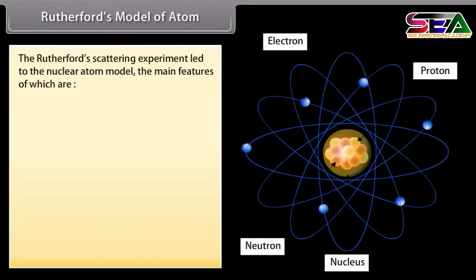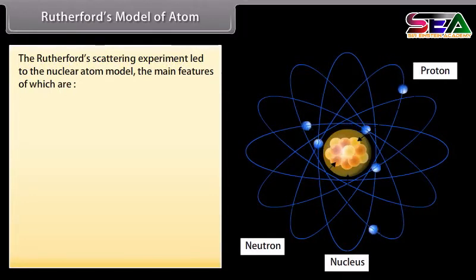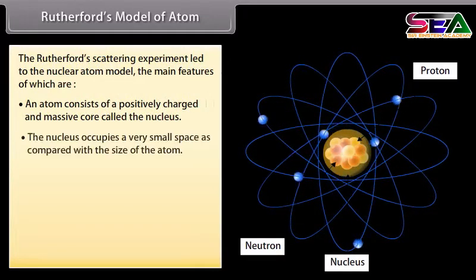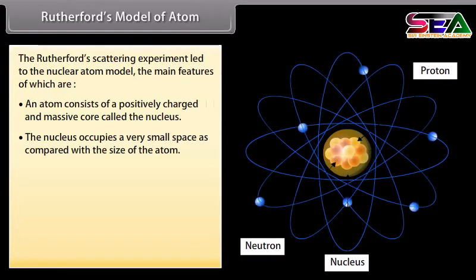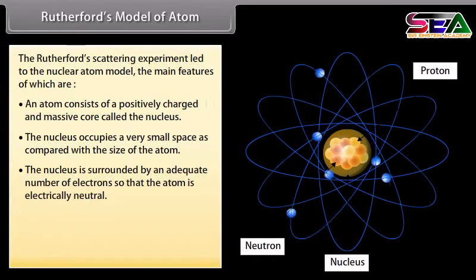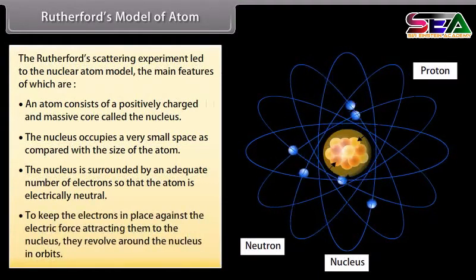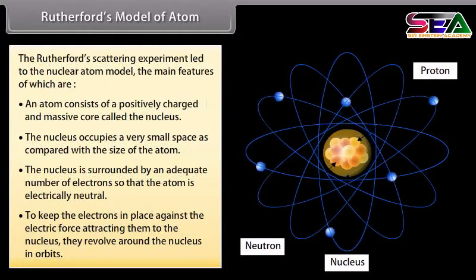Rutherford's model of atom: The Rutherford scattering experiment led to the nuclear atom model. Its main features are: an atom consists of a positively charged and massive core called the nucleus; the nucleus occupies a very small space compared with the size of the atom; the nucleus is surrounded by an adequate number of electrons so that the atom is electrically neutral; and to keep electrons in place against the electric force attracting them to the nucleus, they revolve around the nucleus in orbits.